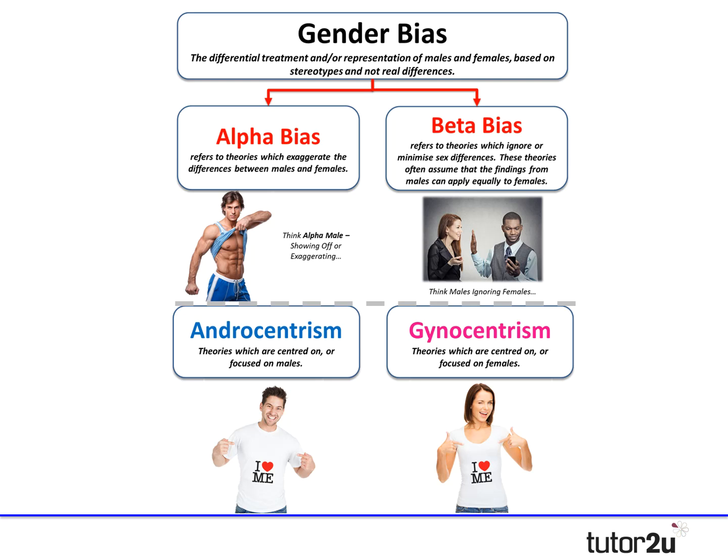So there we have it — you've got four key terms that you need: gender bias, androcentrism, alpha bias, and beta bias. Gynocentrism is a fifth term shown for awareness but is not required by the specification. These are the key terms that underpin this particular unit.